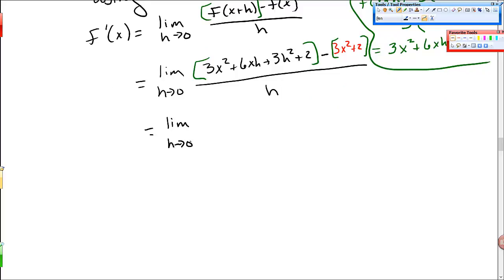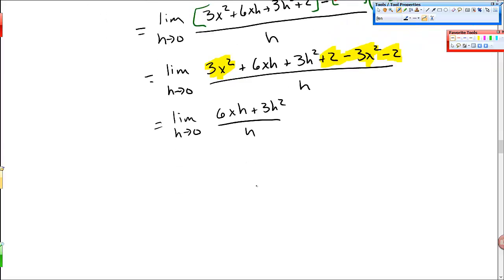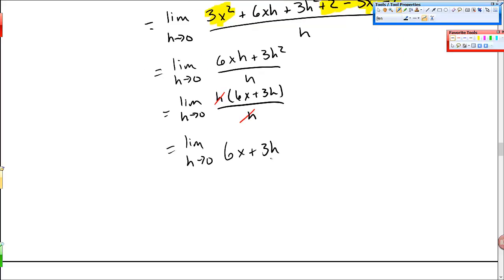So go here and distribute this subtraction sign. So I get 3x squared plus 6xh plus 3h squared plus 2 minus 3x squared minus 2, all over h. Now look here. I have this 3x squared matches with this and will cancel or subtract. This 2 and this 2 cancel. And I'm left with the limit as h goes to 0, 6xh plus 3h squared over h. This is the limit as h goes to 0 of h times 6x plus 3h over h. Those then cancel. And I'm left with the limit as h goes to 0 of 6x plus 3h. And here, the limit actually matters. I'm going to 0. This goes to 0, and so I get 6x as this limit because 3 times 0 is 0.